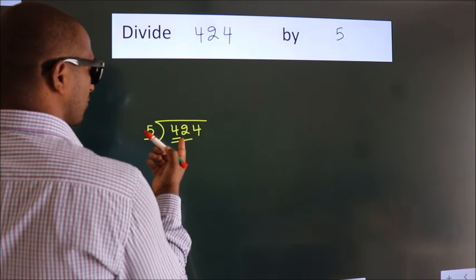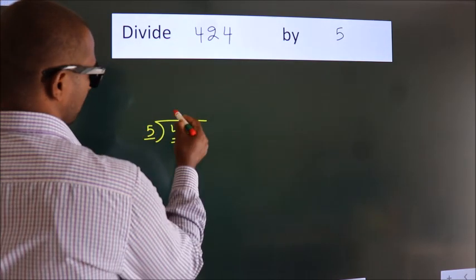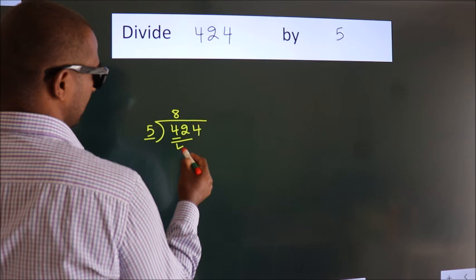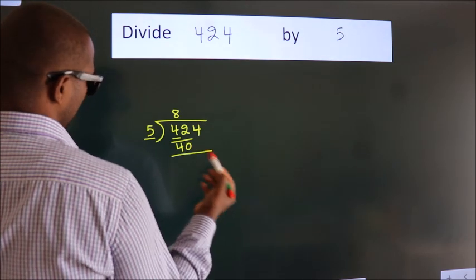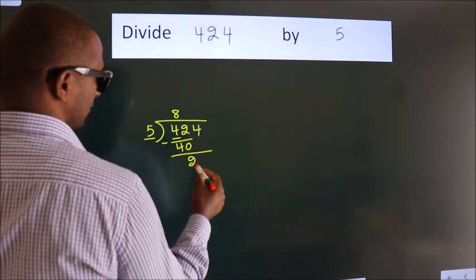A number close to 42 in the 5 table is 5 times 8 equals 40. Now we should subtract. We get 2.